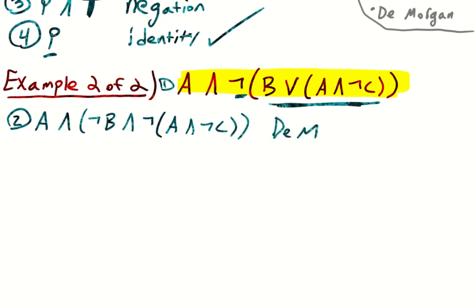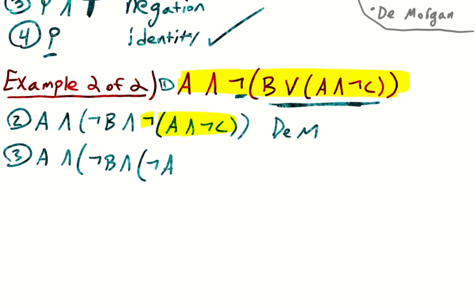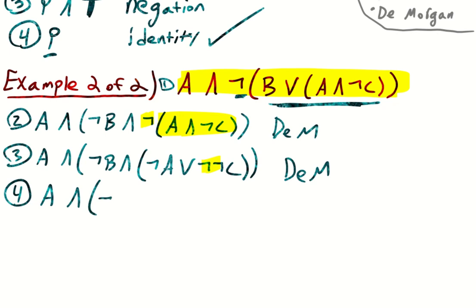Then we can apply De Morgan again because we have a negation of a pair of conjuncts. So for line three, we get: a and (not b and (not a or not not c)), by De Morgan once again. Then for line four, we eliminate the double negation to get: a and (not b and (not a or c)), by double negation.